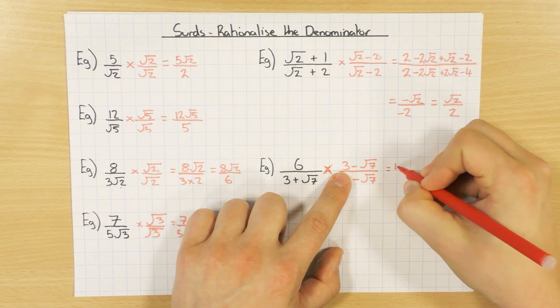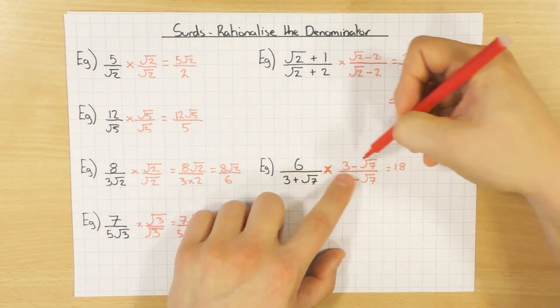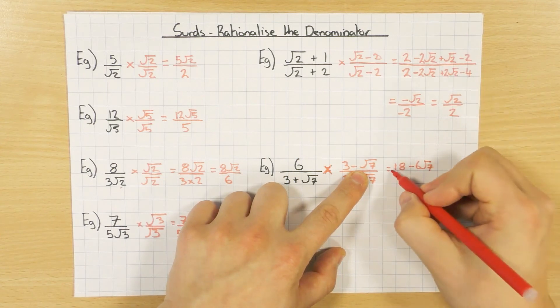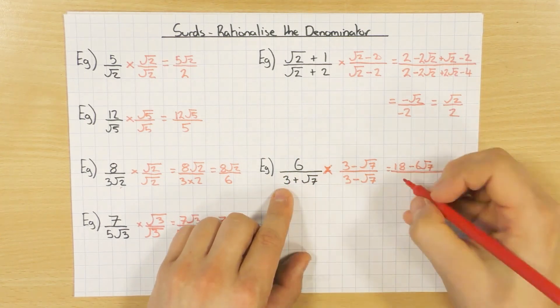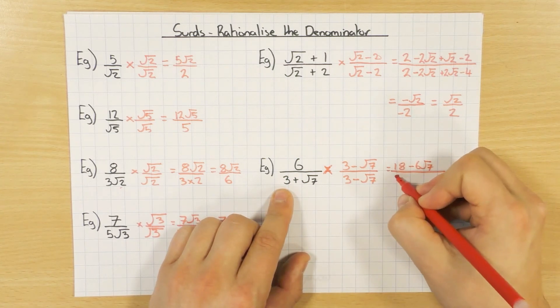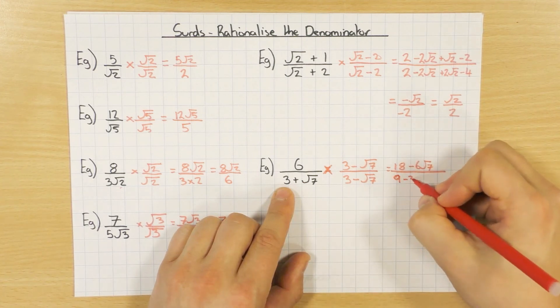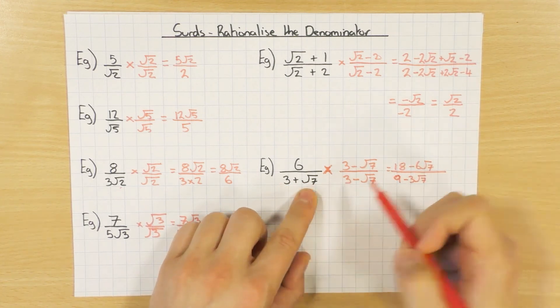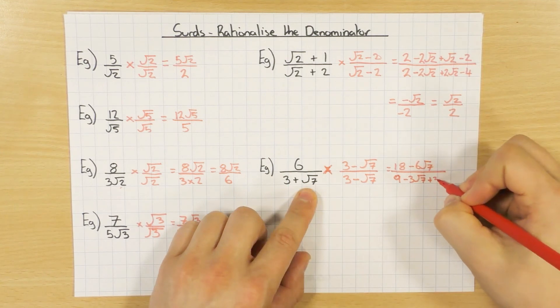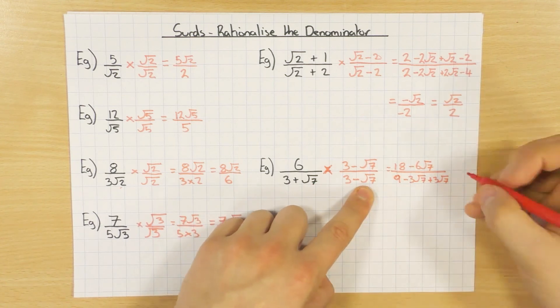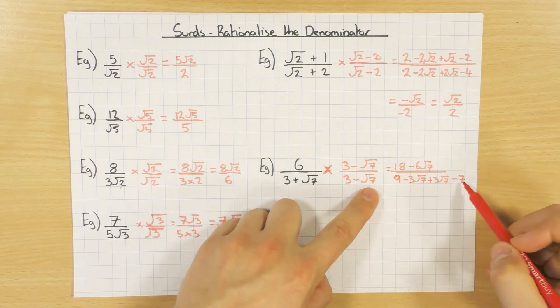So let's work this out. 6 times 3 is 18. 6 times minus root 7 would be minus 6 root 7. On the bottom, 3 times 3 is 9. 3 times minus root 7 is minus 3 root 7. Root 7 times 3 would be plus 3 root 7. And then finally, root 7 times minus root 7 would be minus 7. Remember, if it's the same, root 7 times root 7 is 7, and plus times a minus gets me the minus.